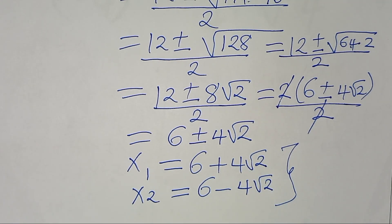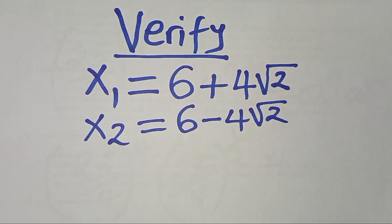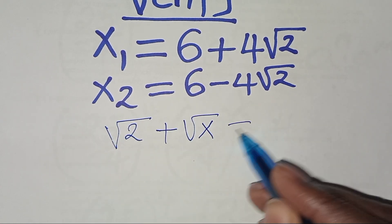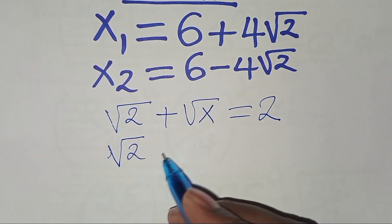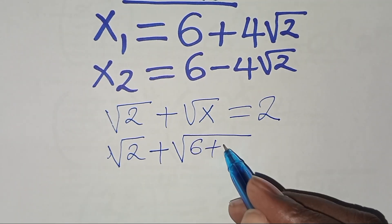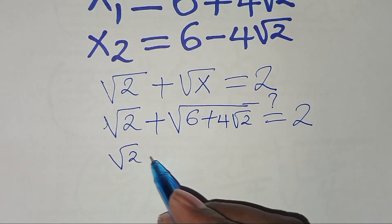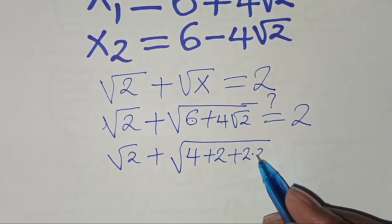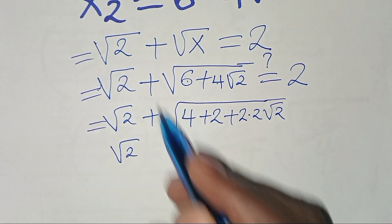Now let's verify both solutions in the original equation √(2 + √x) = 2. Substituting x₁ = 6 + 4√2: we have √(2 + √(6 + 4√2)). We can rewrite 6 + 4√2 as 4 + 2 + 4√2, and express 4 as 2² and 2 as (√2)².